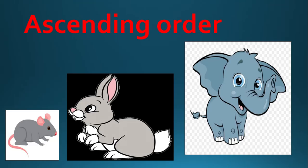Now can you see these pictures? There are three animals and they are arranged according to their height and size. Mouse is smaller than the rabbit. Rabbit is bigger than the mouse but smaller than the elephant. Animals are arranged in ascending order.